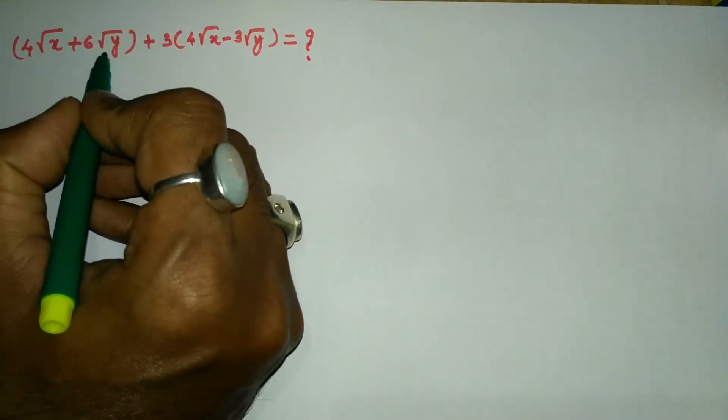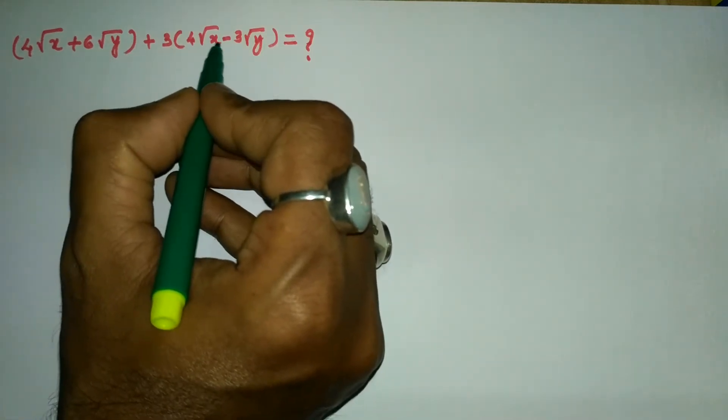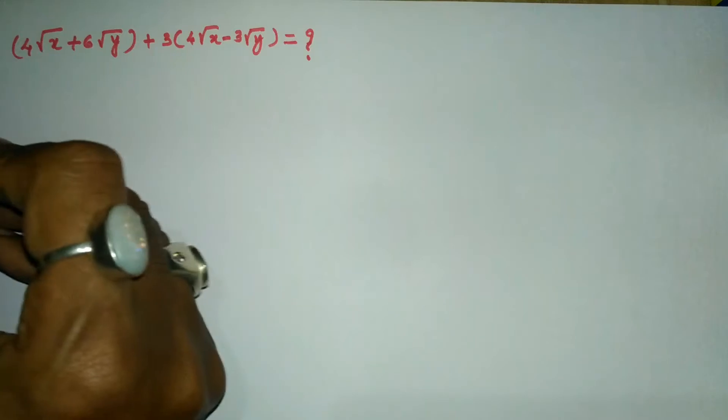So, 4√x + 6√y + 3(4√x - 3√y) equals what?